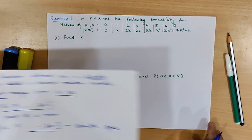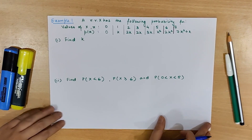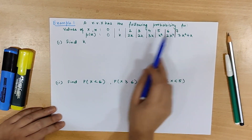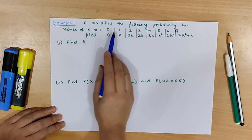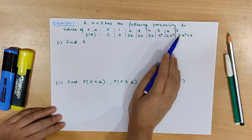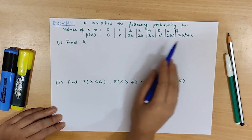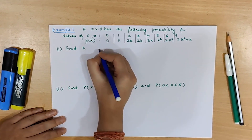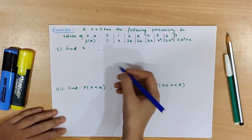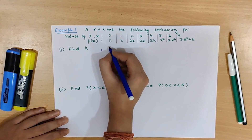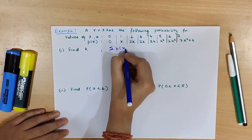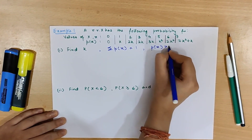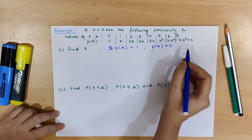Now let's move on to some examples. A random variable x has the following probability function with values of x: 0, 1, 2, 3, 4, 5, 6, 7 and the following probabilities. We need to find k. We already know the two properties that satisfy a probability function: summation of P(x) should be equal to 1, and P(x) should be greater than 0 for every x.